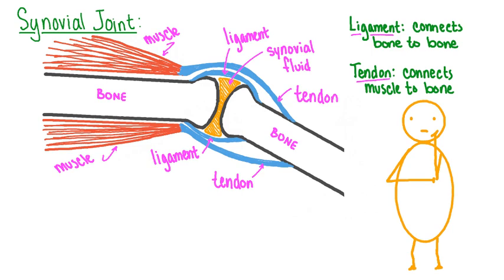Synovial joints include our shoulders, hips, knees, elbows, wrists, and ankles. This also includes the joints between the phalanges in our fingers and the phalanges in our toes. The pivot joint in our neck and the hinge joint in our jaw are also examples of synovial joints.